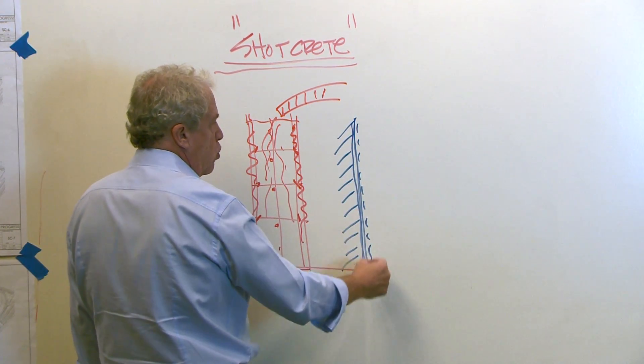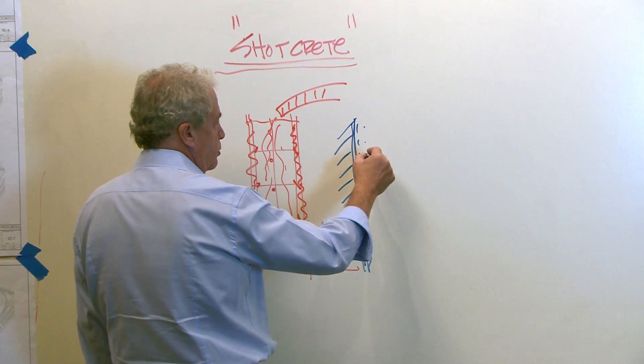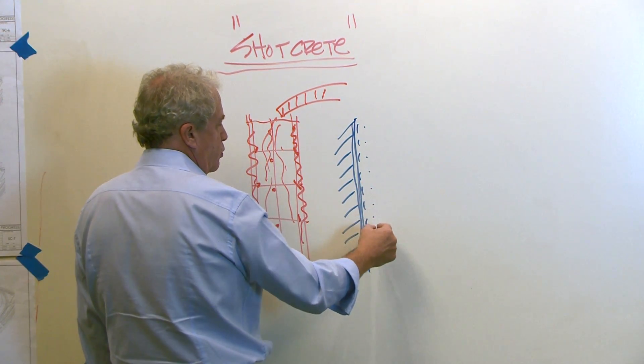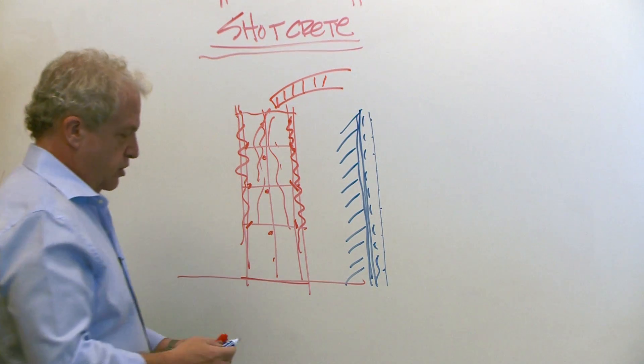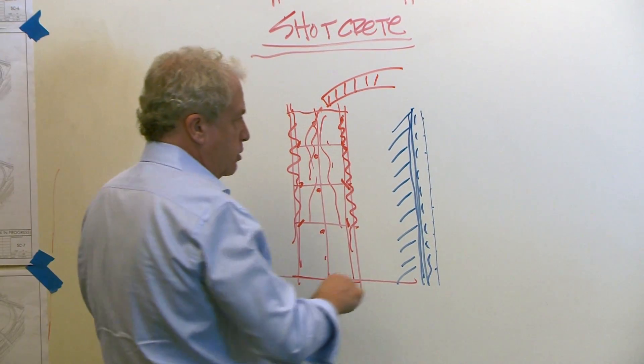And there's a shoring wall put up, and then the steel reinforcing goes in. And instead of forming this, the concrete is sprayed on.